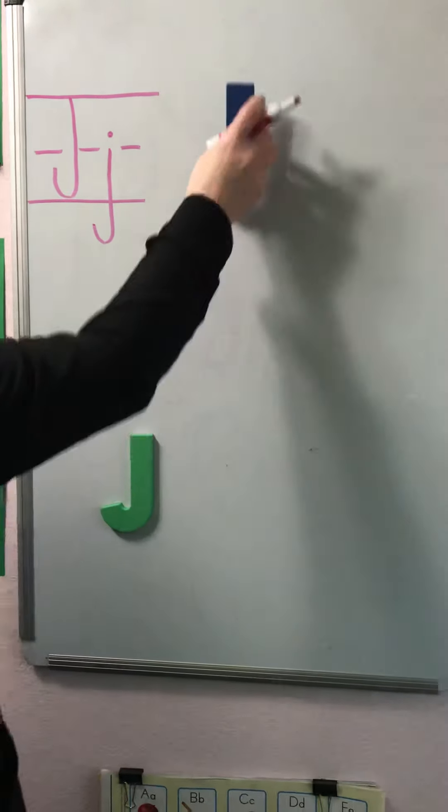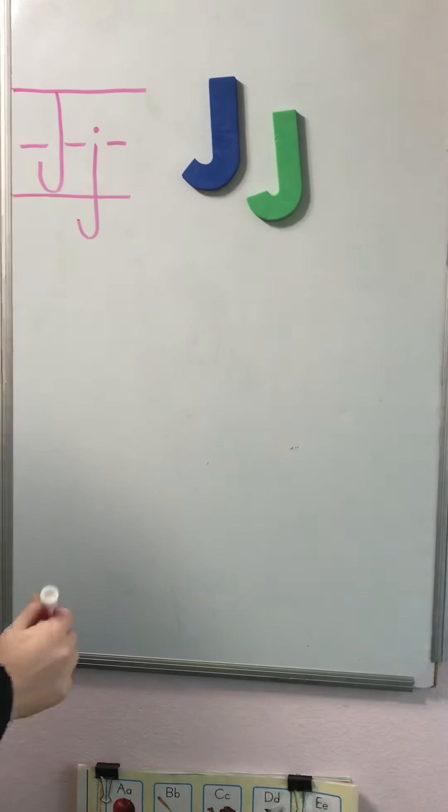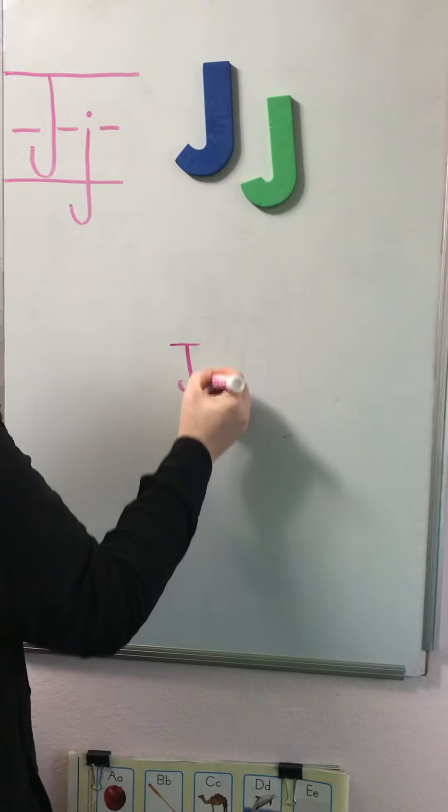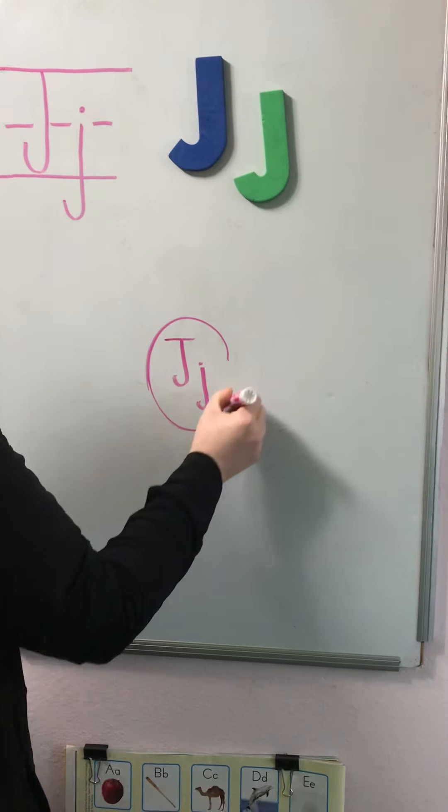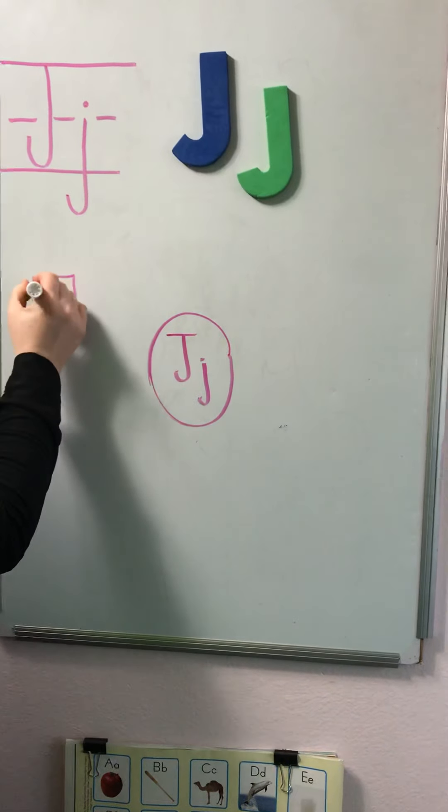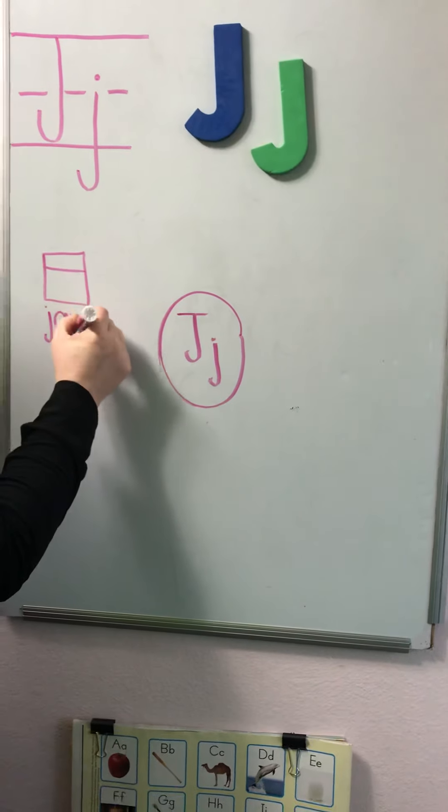So we have our capital J and our lowercase j and now we're going to think of things that begin with the letter J. We have yummy jam. J-A-M.